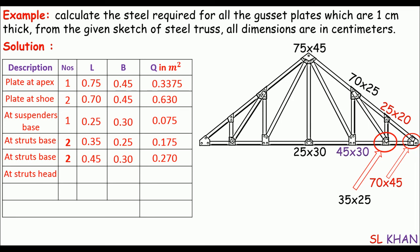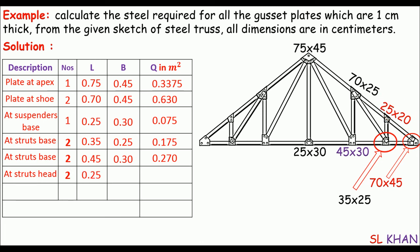We have two more types left at the head of the truss. There are two types: one is 25×20 centimeters and the other is 70×25 centimeters. For the first — 25×20 — there are two plates, one on the right and one on the left side of the truss. Multiplying gives an area of 0.10 square meters.